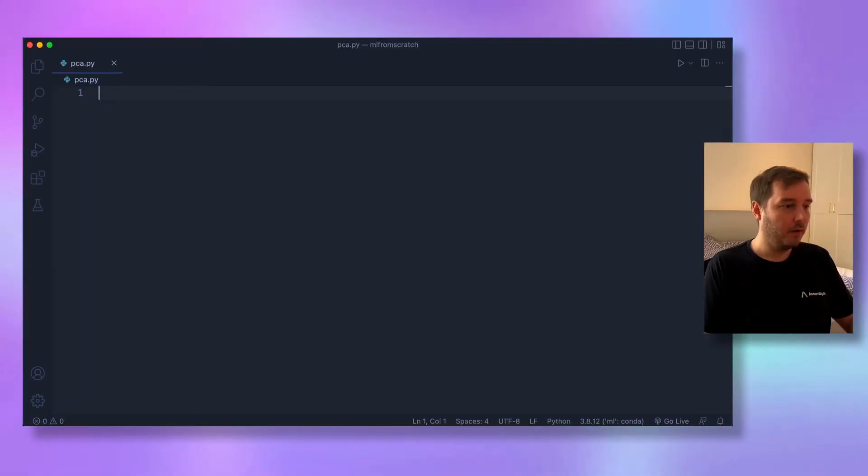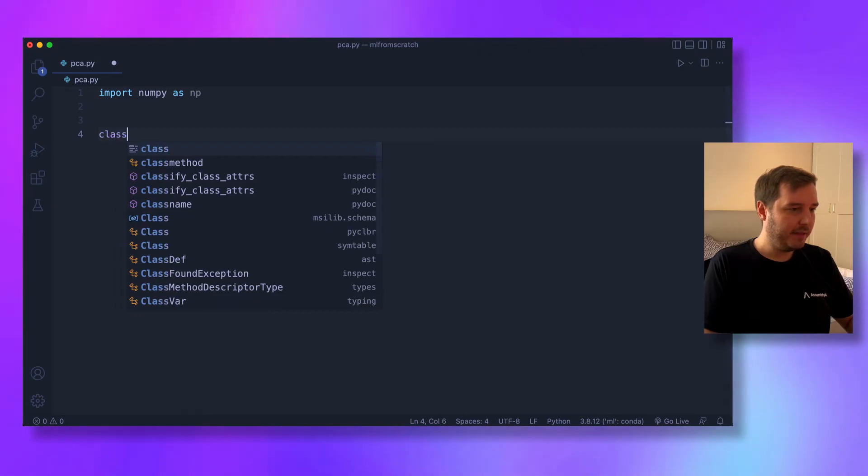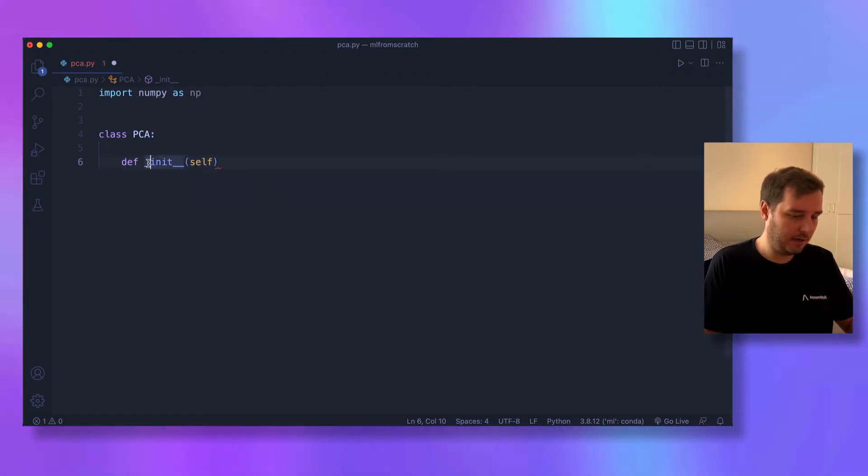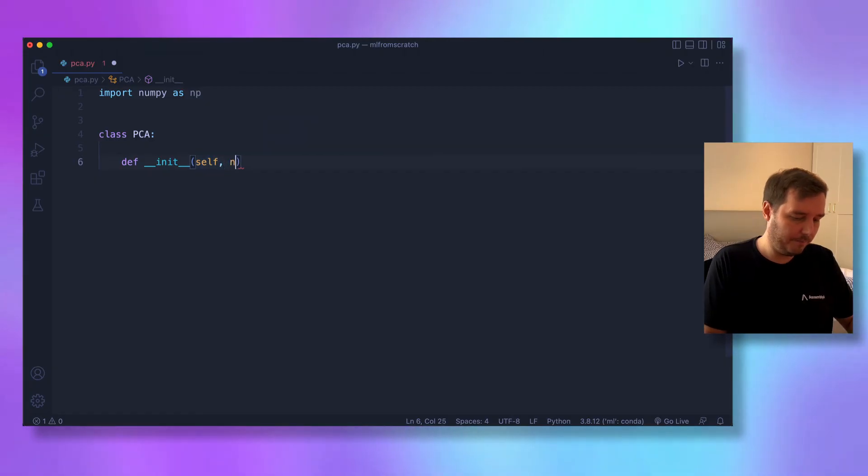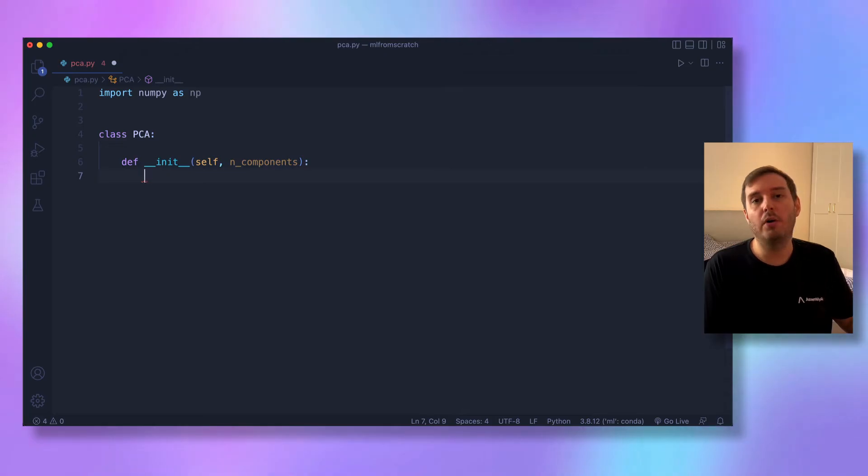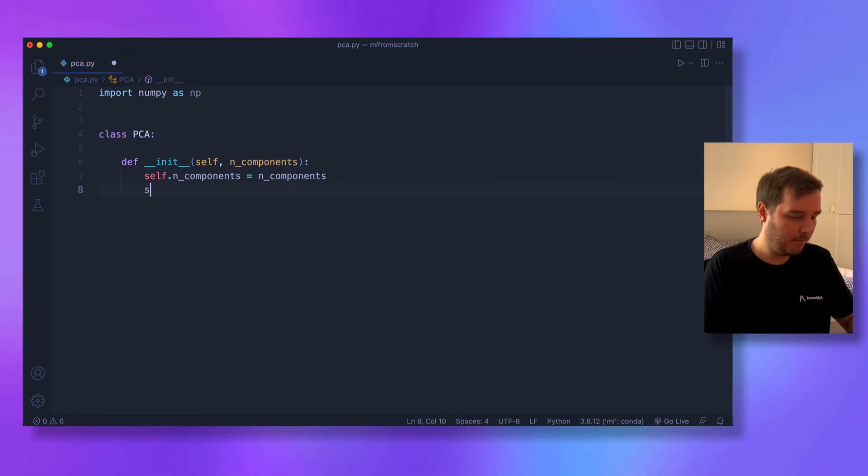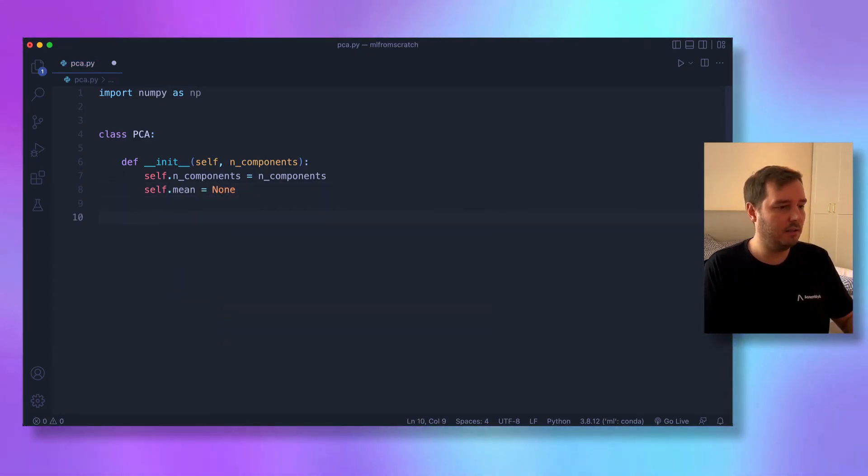Let's jump to the code. First, import NumPy as np, then create our class PCA. This gets an init function with self. As a parameter, we give it the number of components—the number of dimensions we want after the transformation. We store this as self.n_components = n_components. We also want to calculate the mean, but for now we simply say this is None.